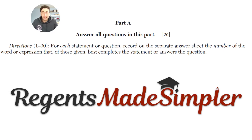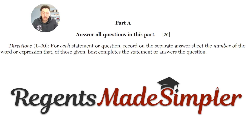We're starting here on Part A. Part A covers questions one through 30. For each statement or question, record on the separate answer sheet the number of the word or expression that best completes the statement or answers the question. Part A is all multiple choice — you're given four choices and you are to choose the correct one that fits the answer.